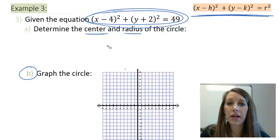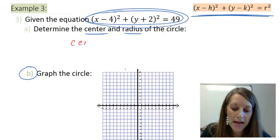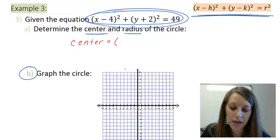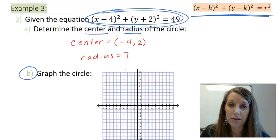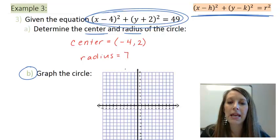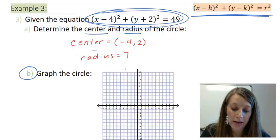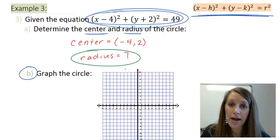So I'm going to tell you the answer that most students come up with. Whenever I ask this question the first time, most students tell me that the center is (-4, 2), and that my radius is 7. So if you did this, you actually got an incorrect answer. You got the correct answer for radius. That is a correct answer, but you actually got an incorrect answer for center.